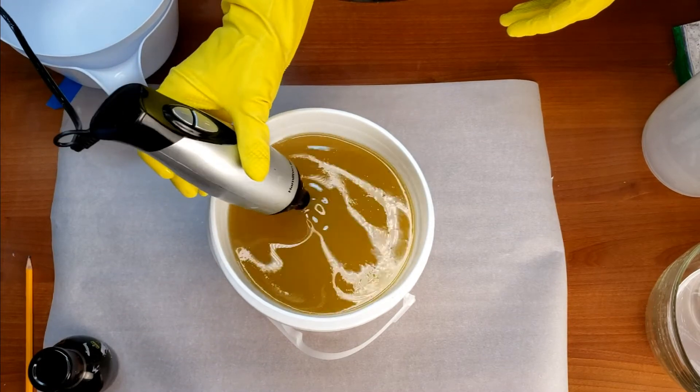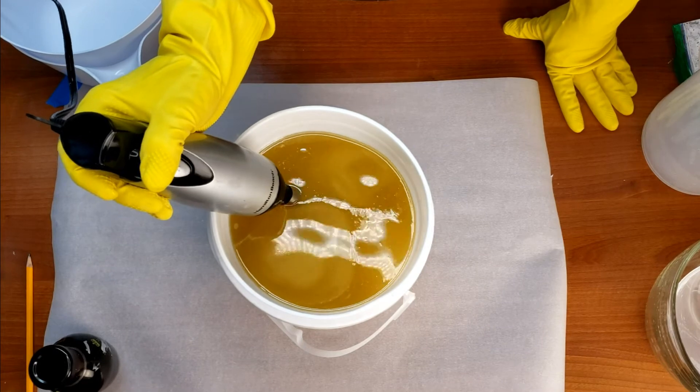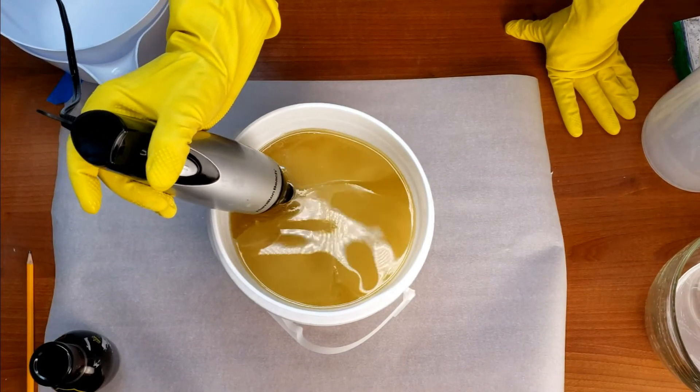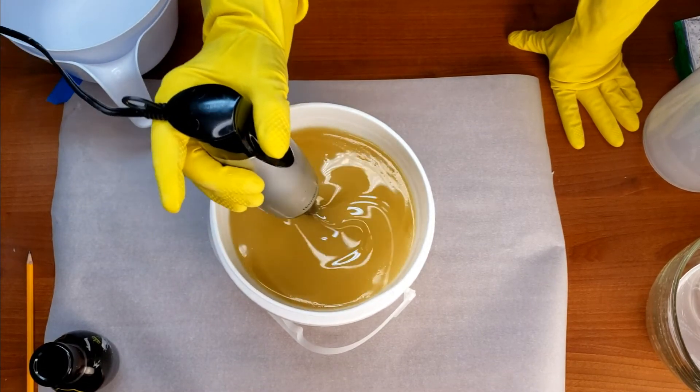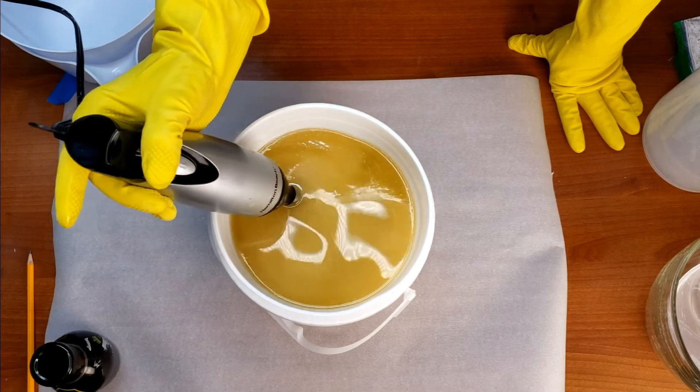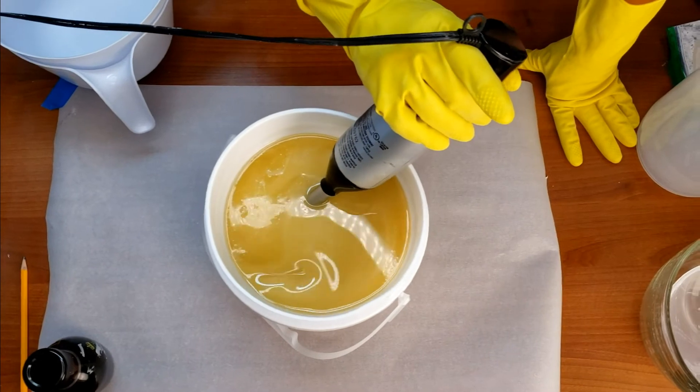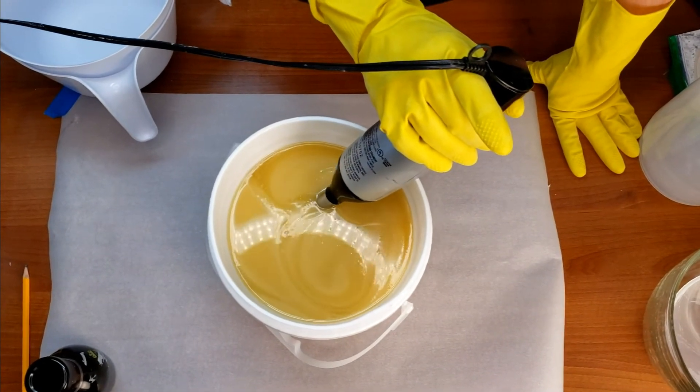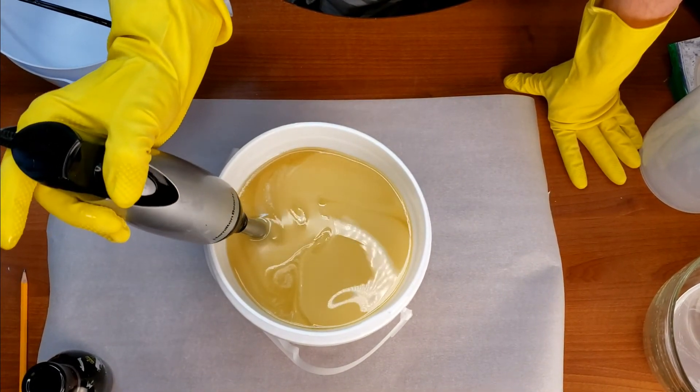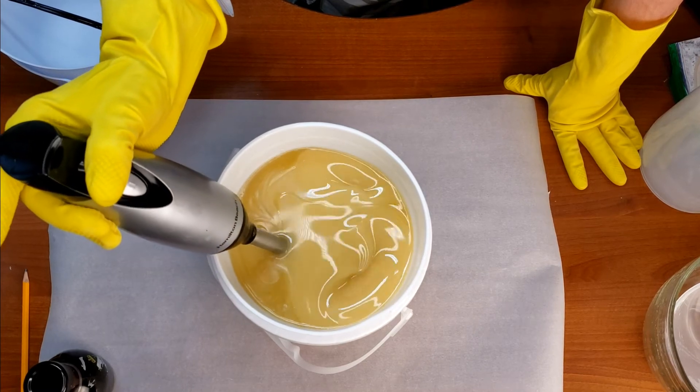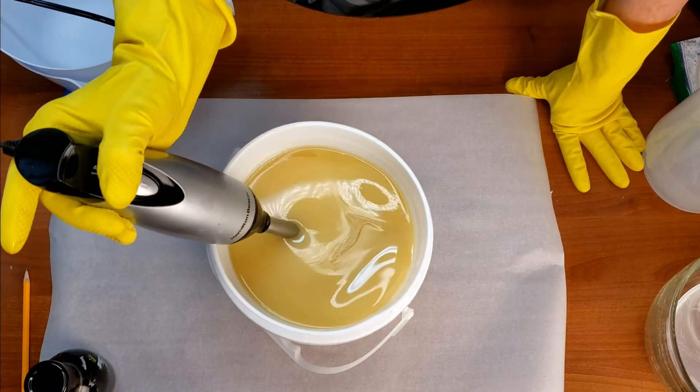Stick blender goes in - some pulses with that and already you can see those blooms of kind of creamy soap batter goodness there. It's usually just such a better idea to pulse the blender than it is to do a continuous mix. I went into a little bit of a slower motion here just because I think it looks great - so satisfying.